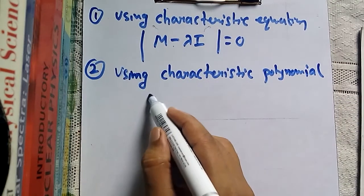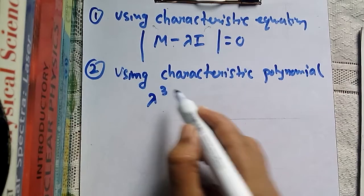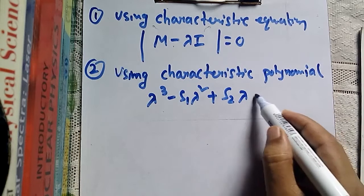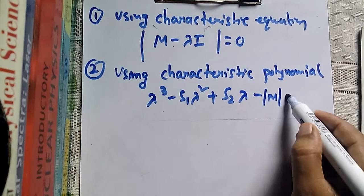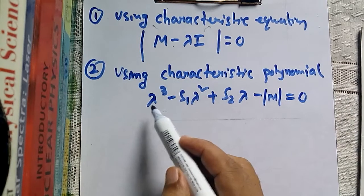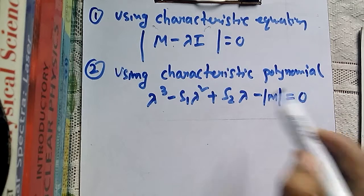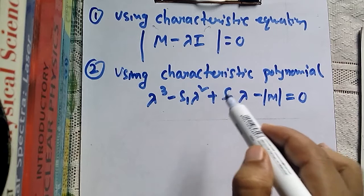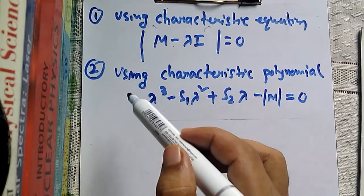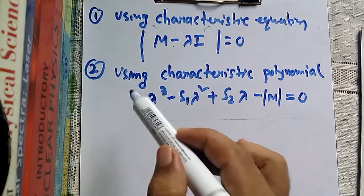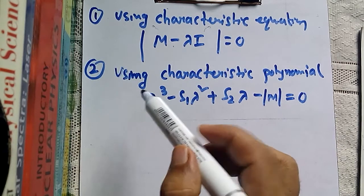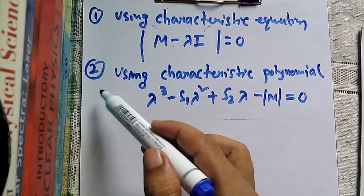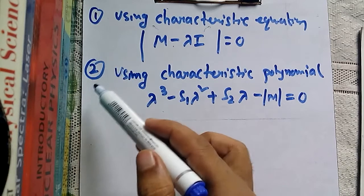The characteristic polynomial equation is: lambda³ minus S1·lambda² plus S2·lambda minus the determinant of the given matrix equals zero. This method is very time-saving, easy, and flexible — especially when tougher problems come, this method is more useful. That's why we will find our eigenvalues using the characteristic polynomial.